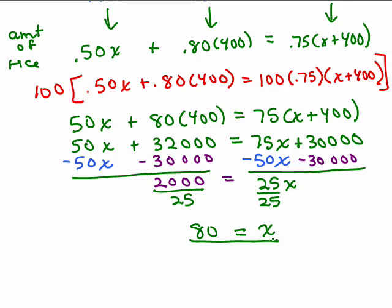You have to remember that X might not be the answer to the question being asked. We have to go back to the original problem. You could have also just done the distributive property using all the decimal points and done everything with a calculator, and you should still get X equals 80. I just did it without a calculator, multiplying by 100. So our next step is to go back to the original problem, draw a picture, and see if this all makes sense.